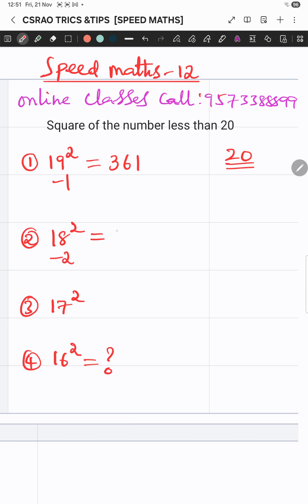18 minus 2 is 16. 16 times 2 is 32, and 2 square is 4, okay, 324. 17, how much is it less than 20? Okay...